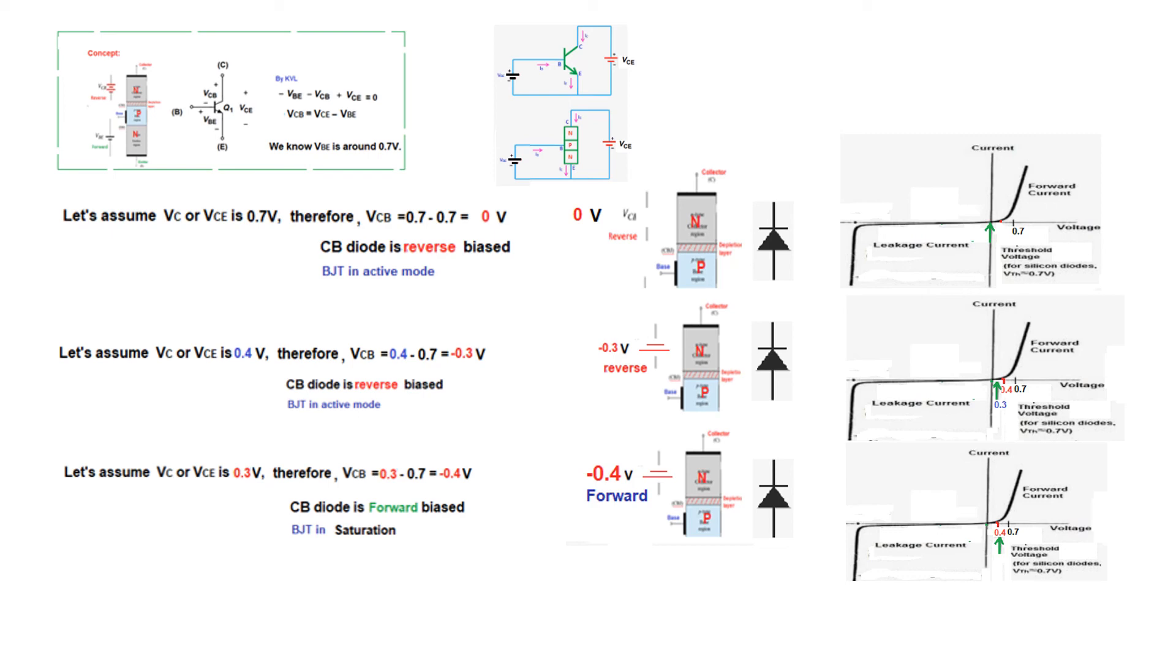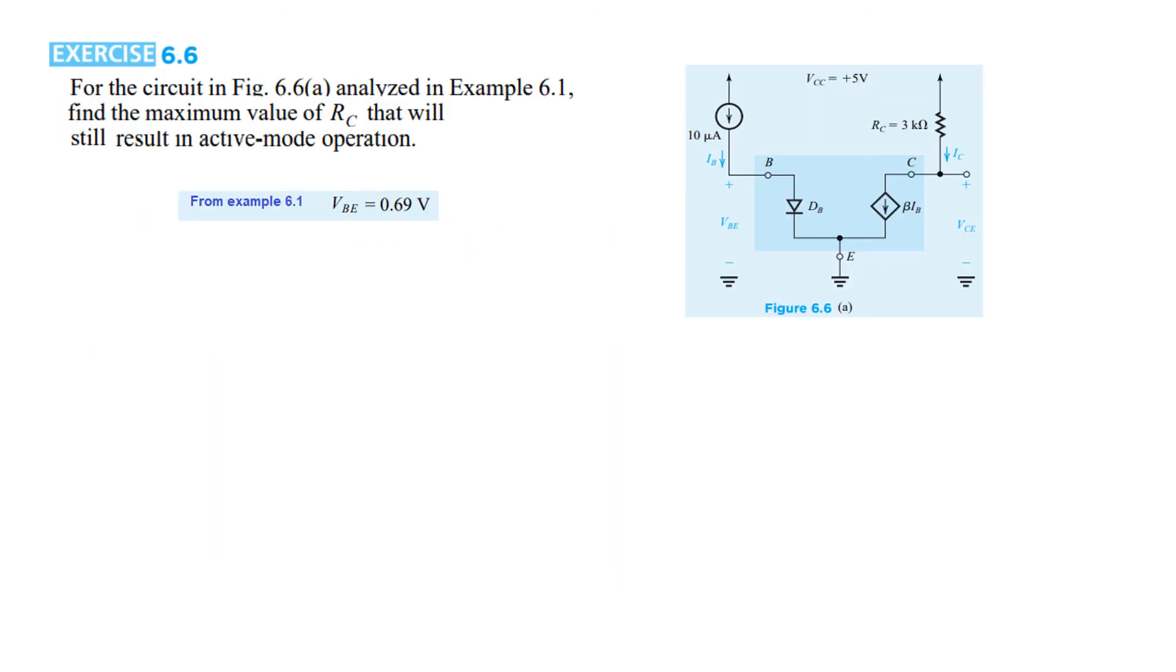So this is the basic understanding that we have to keep in mind that at the edge of active region VCE is 0.3 volt. And with this concept let's solve an example which is exercise 6.6 in the book. For the circuit analyzed in example 6.1, find the maximum value of RC that will still result in active mode. So here the RC is 3 but we have to find maximum value up to which the circuit will remain in active mode.